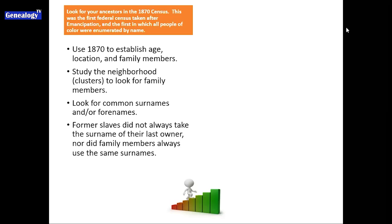I use the 1870 census to establish baseline data about the ancestor — to see how they're identifying themselves after emancipation, or five years after emancipation. There's some wiggle room because in those five years, they may have changed their names, their locations, or their spouses. So you use the 1870 to establish the age, location, household, and family members of your ancestor.